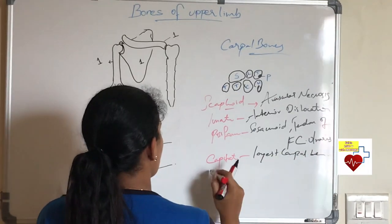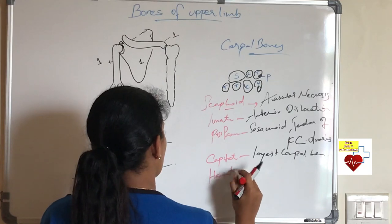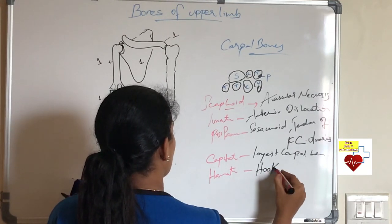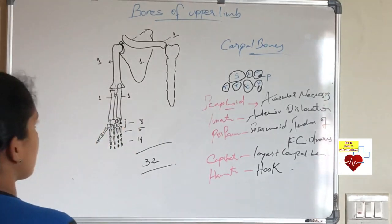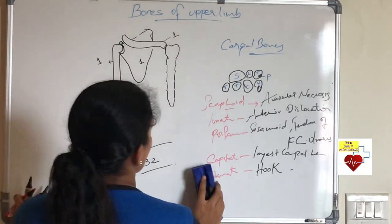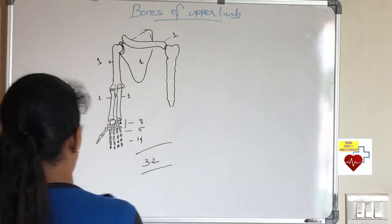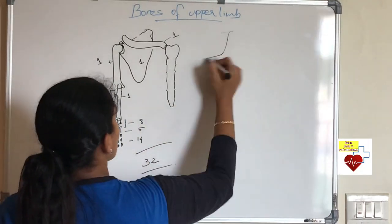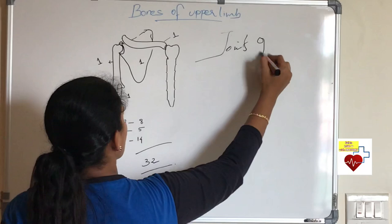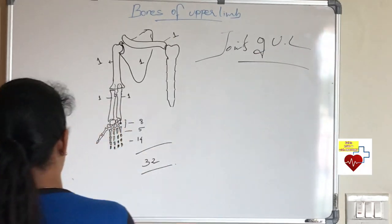Trapezium, trapezoid, nothing much. Yeah, trapezium, it articulates with your first metacarpal. And the last carpal bone is hamate. It has a specialty which presents with a hook, hook of hamate. What attaches to the hook of hamate? Flexor retinaculum. We come to it later.